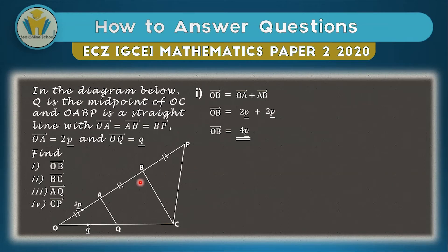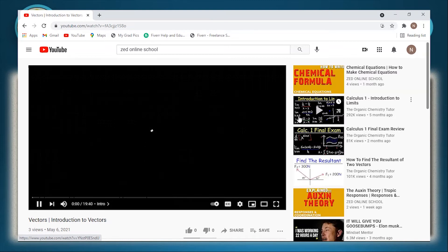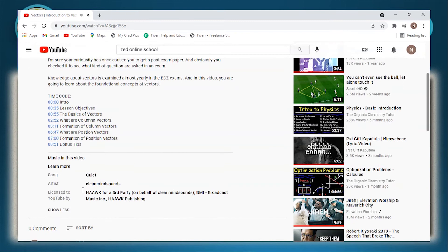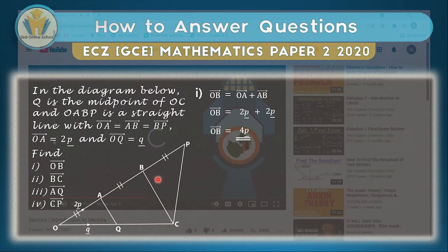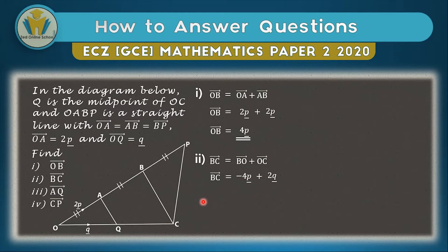Question two asks us to find BC. For BC we're going to use the triangle of addition — if you don't know about it, check the introduction to vectors video. BC therefore equals BO plus OC. BO is just the opposite of OB, so it becomes minus 4p. OC equals q plus q since Q is the midpoint, so we add 2q. An important step is arranging positive vectors before negative ones.